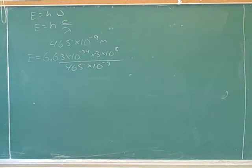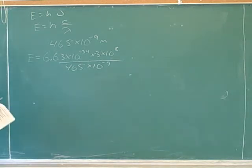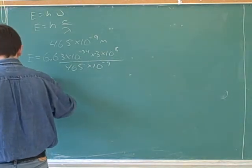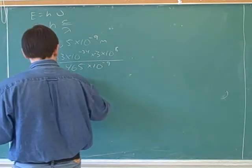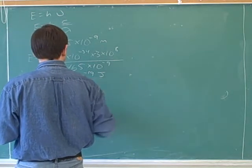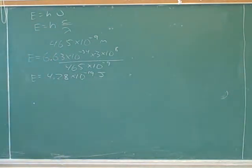I'm going to write a number for that. So 6.63 times 10 to the negative 34 times 3 times 10 to the 8th divided by 465 times 10 to the negative 9. So I got 4.28 times 10 to the negative 19 joules.